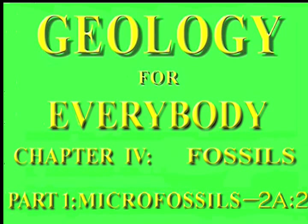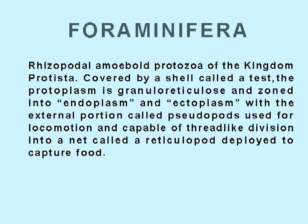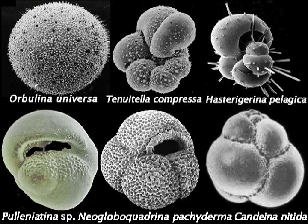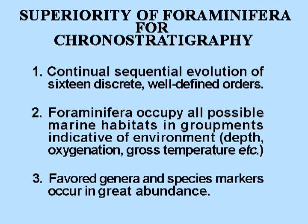Welcome to the second slideshow about Foraminifera. The first one outlined the way these unicellular, mostly shell-covered granuloreticulate protists are currently classified, emphasizing their great diversity and their existence in many ecological niches now and in the past. Here we attempt to show how these qualities are used to advantage by several wide-ranging disciplines of science.